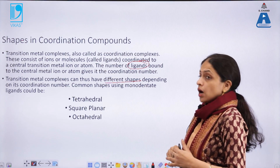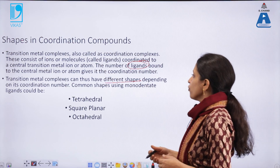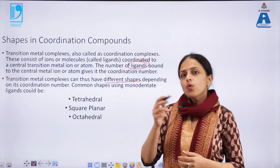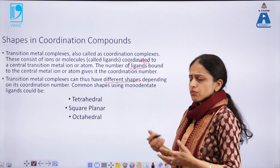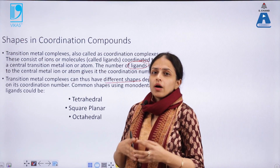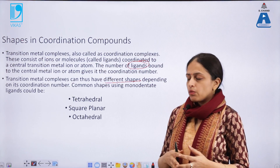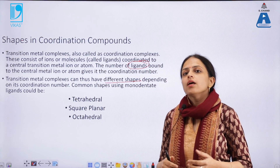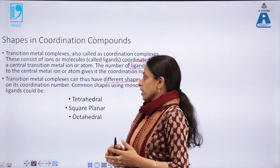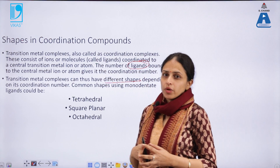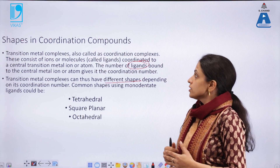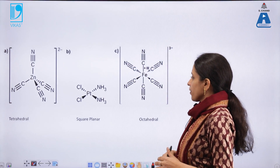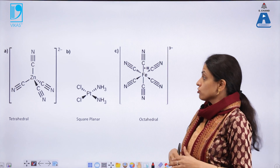The common shapes encountered using monodentate ligands include: tetrahedral, where the central metal atom is attached to four atoms at a bond angle of 109.8 degrees; square planar, where the bond angle is 90 degrees; and octahedral, where six groups or atoms are attached to a central metal atom. Examples of these three forms — tetrahedral, square planar, and octahedral — are shown on the screen.